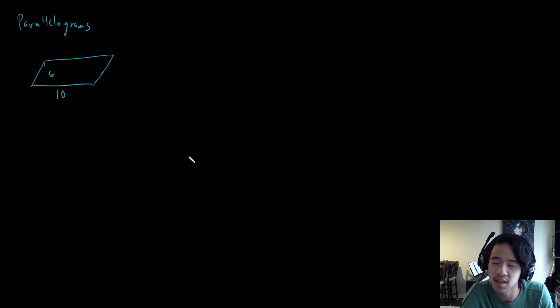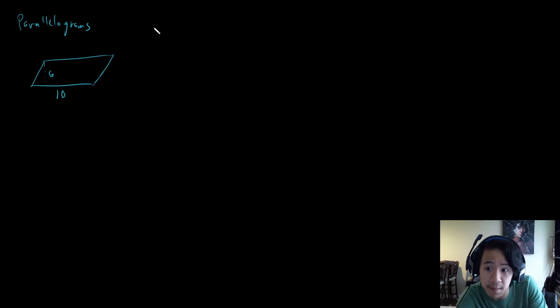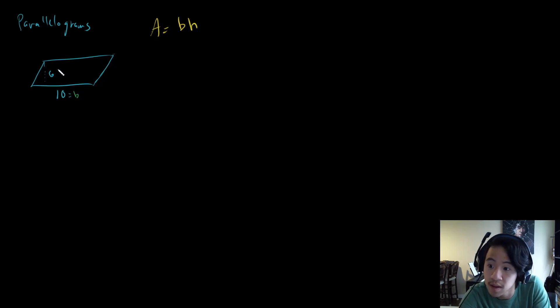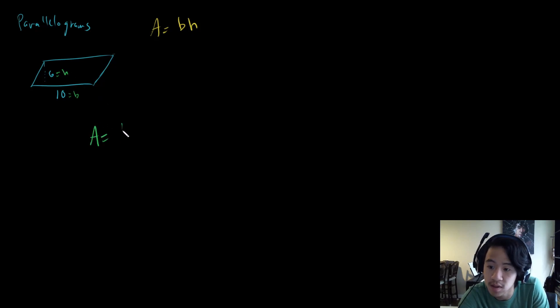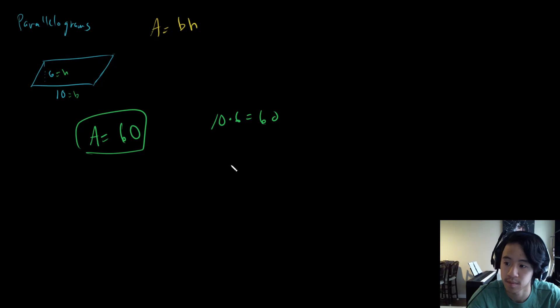Let's move on to parallelograms. The area of a parallelogram is quite similar to the area of a rectangle — it's going to be base times height. In this case, our base is 10 and our height is 6, so our area is equal to 60, because 10 times 6 equals 60. That's it for parallelograms.